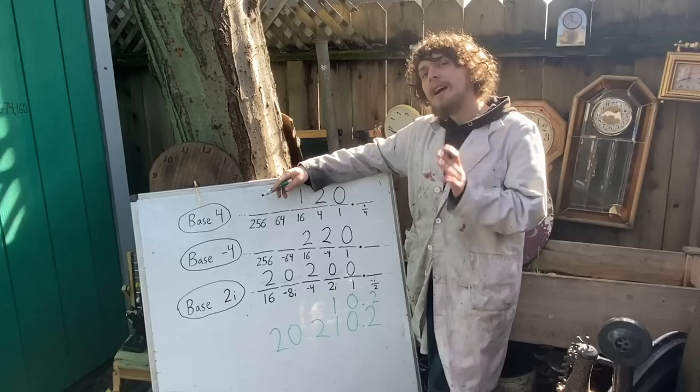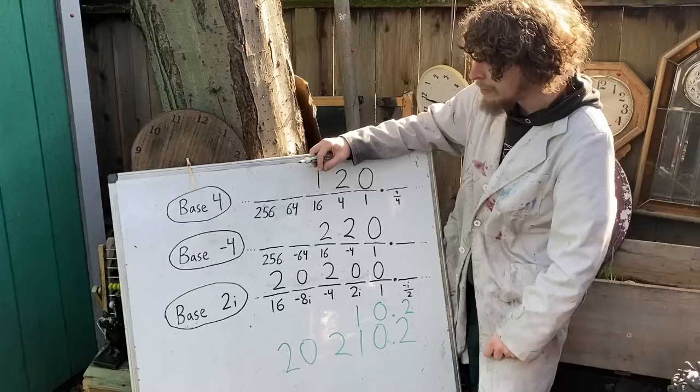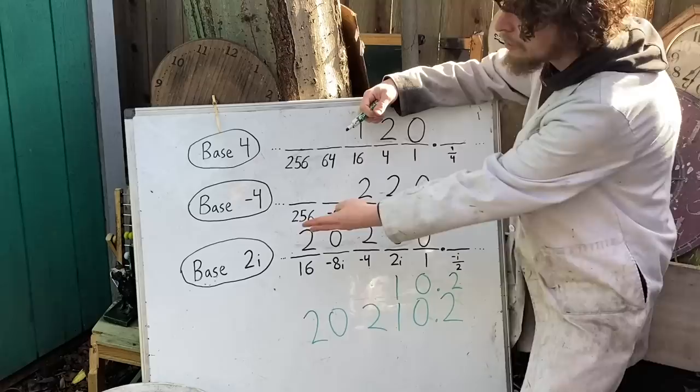And in fact, base 2i could represent any complex number, not just the points called Gaussian integers, although some of the other points might require an infinite amount of digits in their representation, which is a problem we'll encounter in any positional numeral base like this, including our base 10 system. But the good news is that for any Gaussian integer, we're guaranteed a finite length representation.